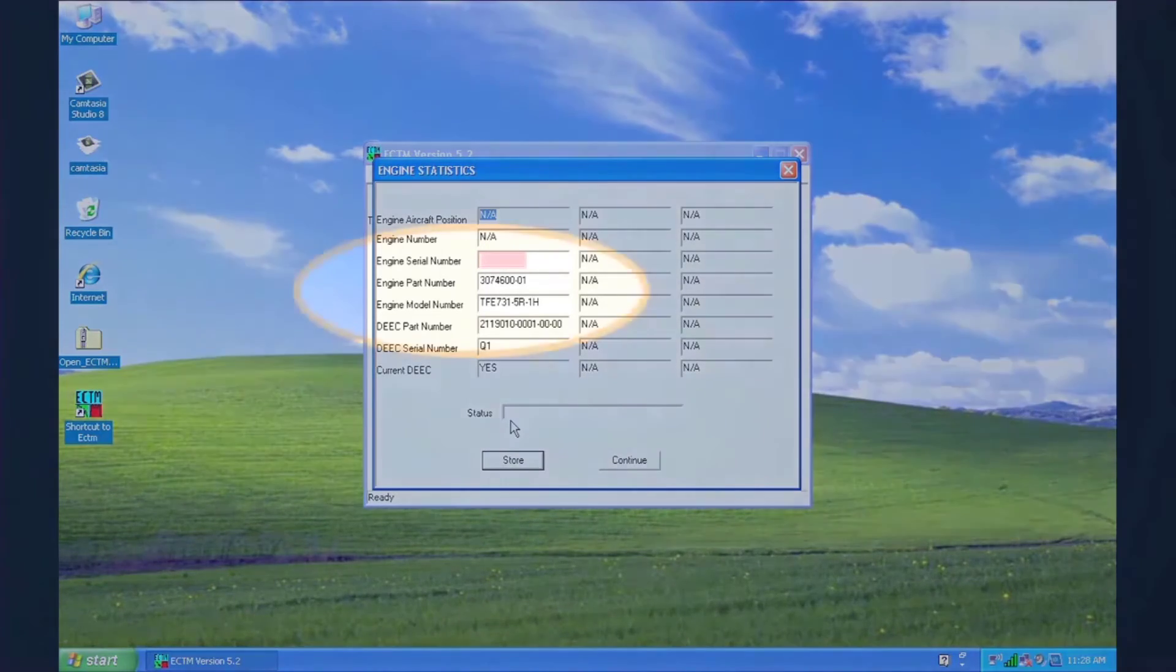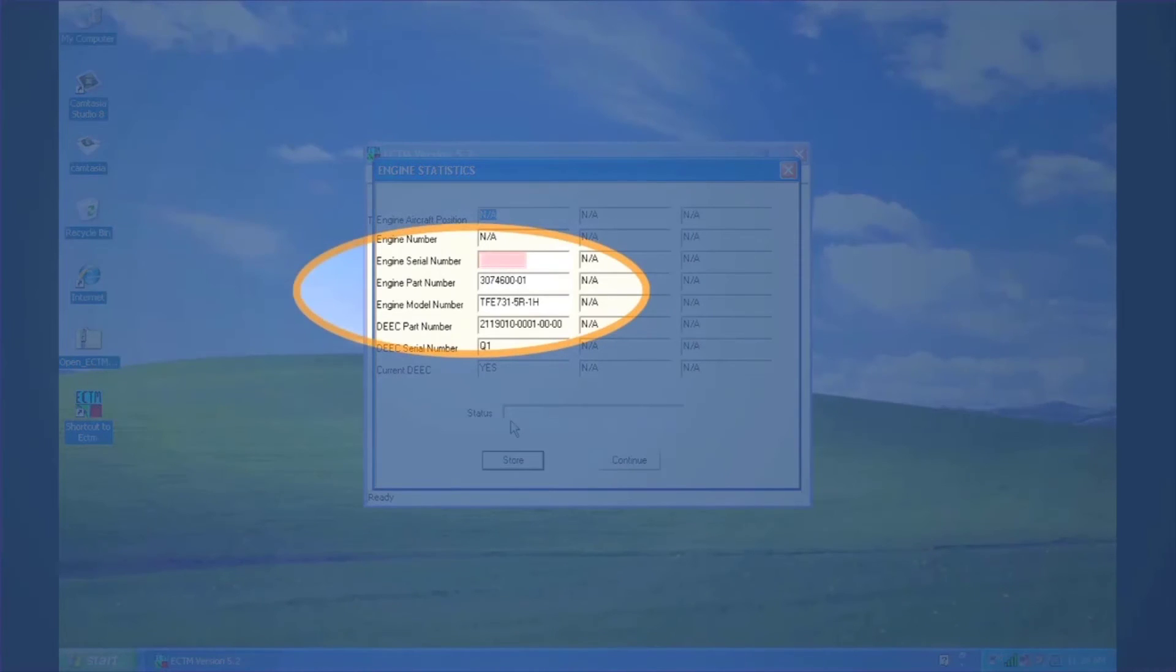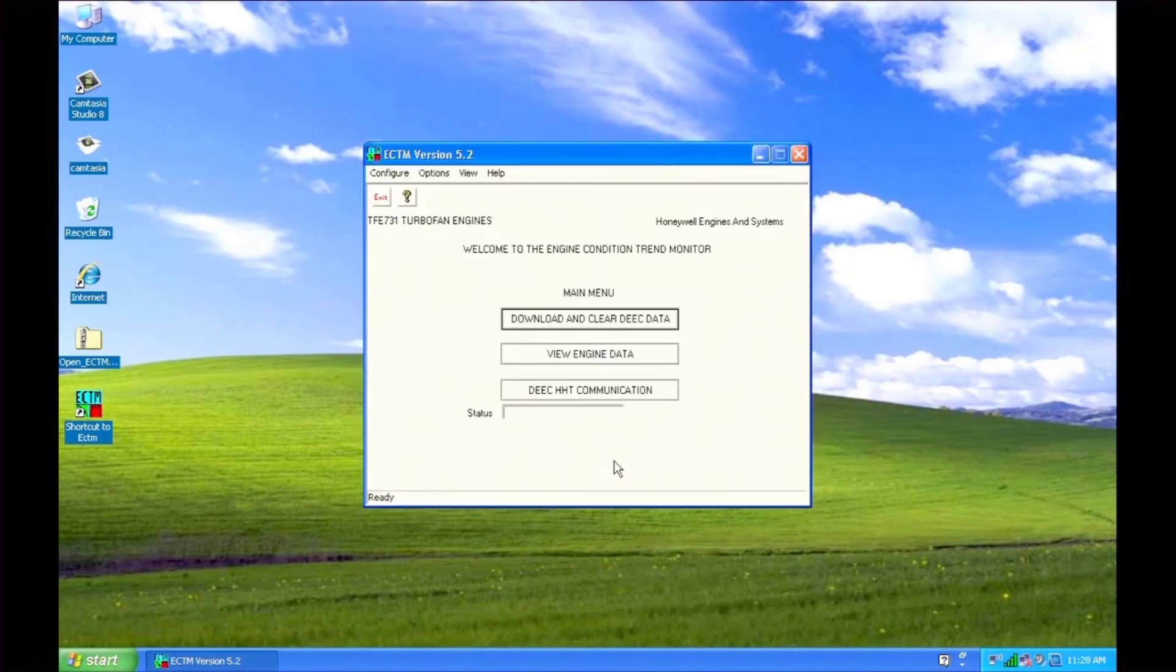In the Engine Statistics window, enter the engine serial number, part number, and model number. The engine model number is case sensitive. Store the data, close the program, and power down the aircraft for at least one minute.